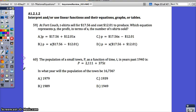Okay, if you have questions on problems 59 through about 63, this video will help you. Problem 59: at Fort Couch, t-shirts sell for $17.56 and cost $12.01 to produce. Which equation represents P, the profit, in terms of X, the number of t-shirts sold?